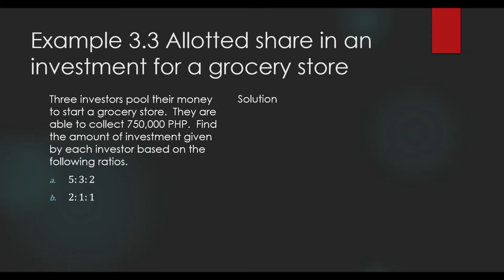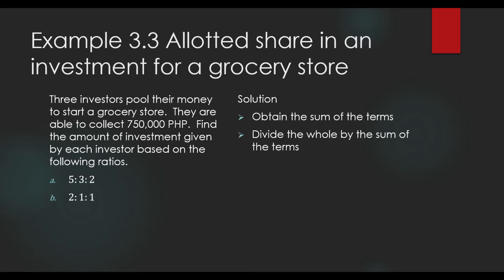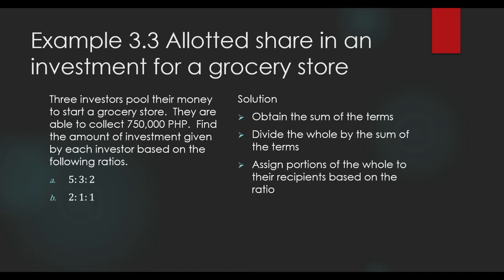This is what we shall do. We shall obtain the sum of the terms, and then we will divide the whole. The whole here refers to P750,000 — that is the totality of the amount collected for this endeavor. We will divide P750,000 by the sum of the terms, and then assign portions of that whole to their recipients based on the ratio.